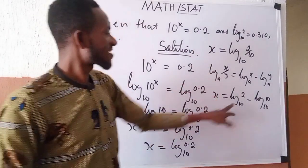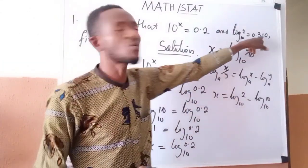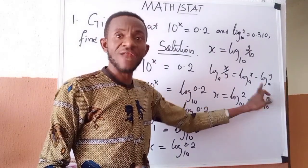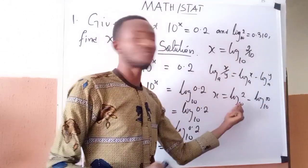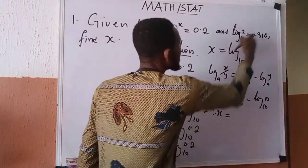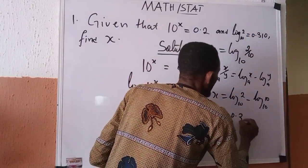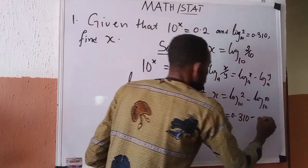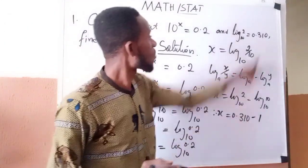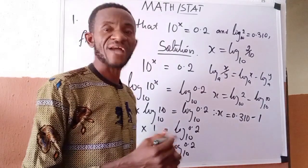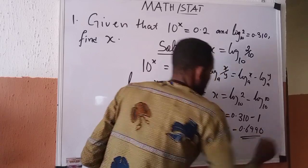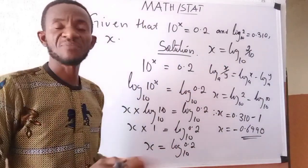At this point we can see that we now have log of 2 base 10, and log of 2 base 10 was given to us. And log of any number to its own base is 1. So substituting: x equals 0.310 minus 1. Therefore x equals minus 0.690.